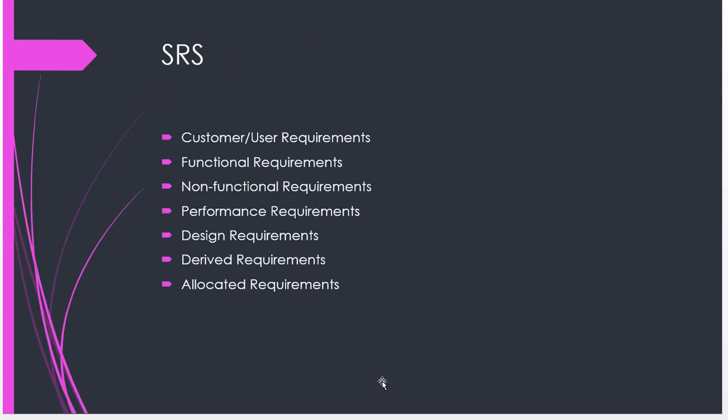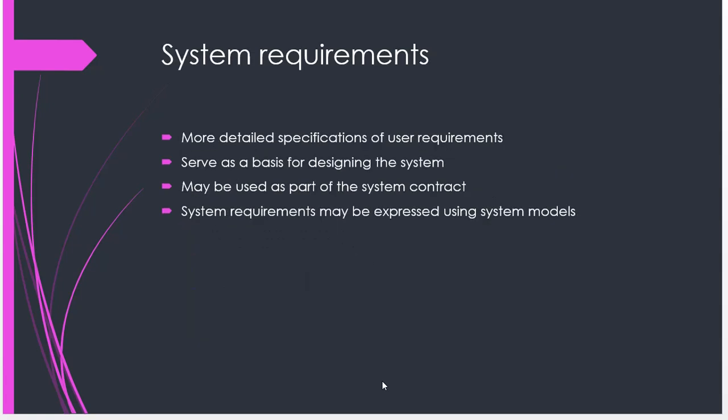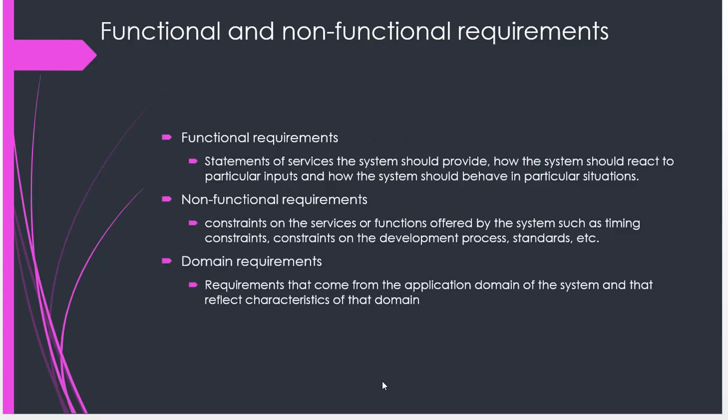In a nutshell, our SRS would contain customer or user requirements, functional requirements, and non-functional requirements — which can also incorporate performance requirements, design requirements, and other types of requirements that affect how the system works. Functional requirements are what the system should provide for the user to be able to do their work. Non-functional requirements are the constraints on the services or functions offered by the system, such as timing constraints and development process standards — they do not affect the functions but are required for the system to be a pleasure to use. There are also domain requirements, which could include regulatory issues or domain-specific knowledge.